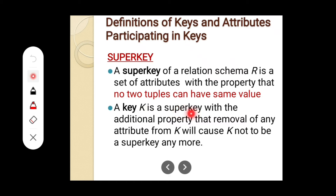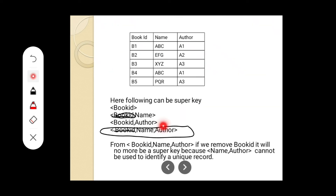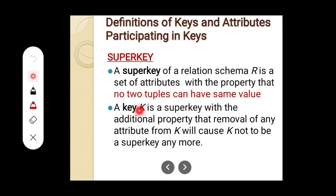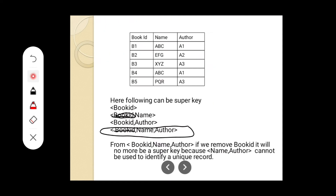A key K is a super key with the property that removal of any attribute from K — we have removed book_id from K — will cause K not to be a super key anymore. I am going to remove it, and the remaining key will not be a super key anymore. This means that this is a super key. This is another definition for super key. The main definition is: super key of a relation schema R is a set of attributes with the property that no two tuples can have the same value.